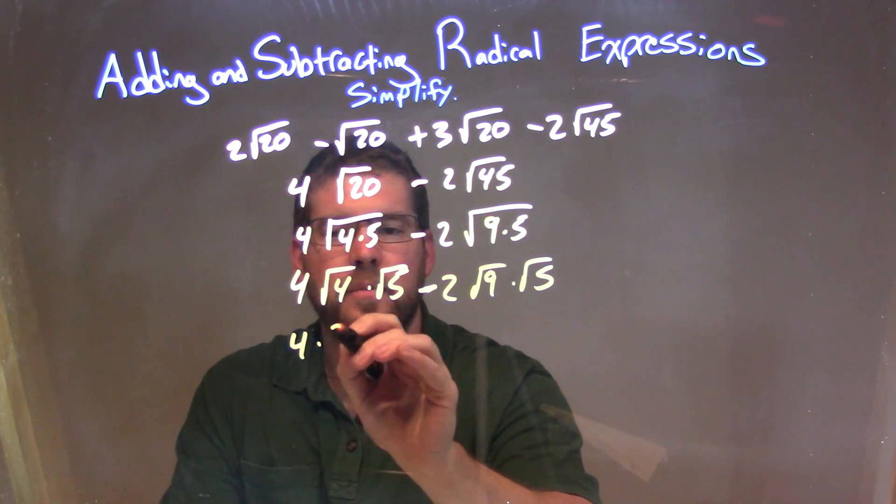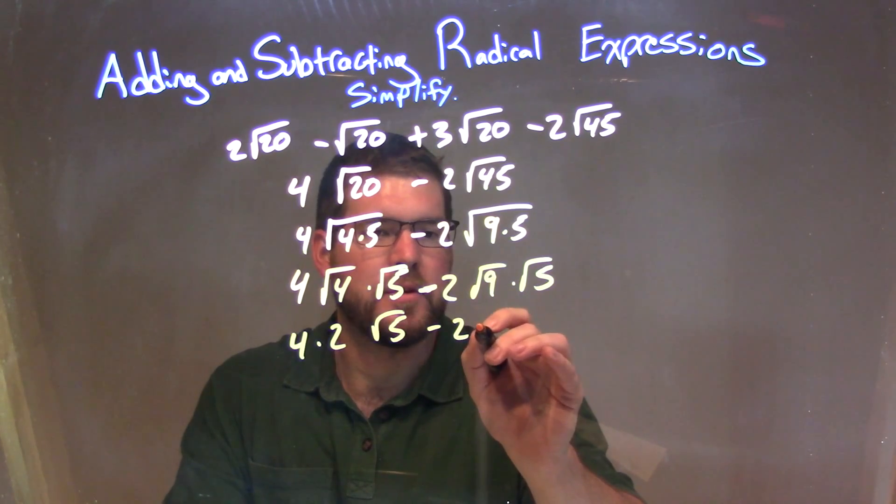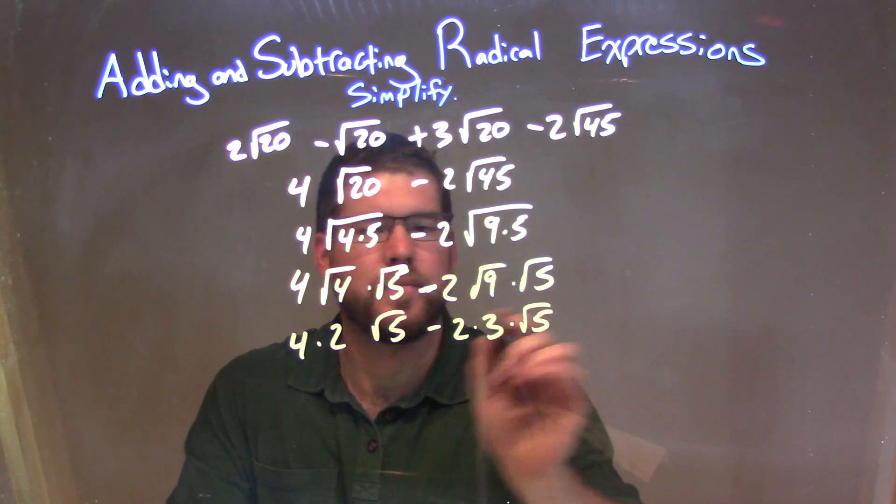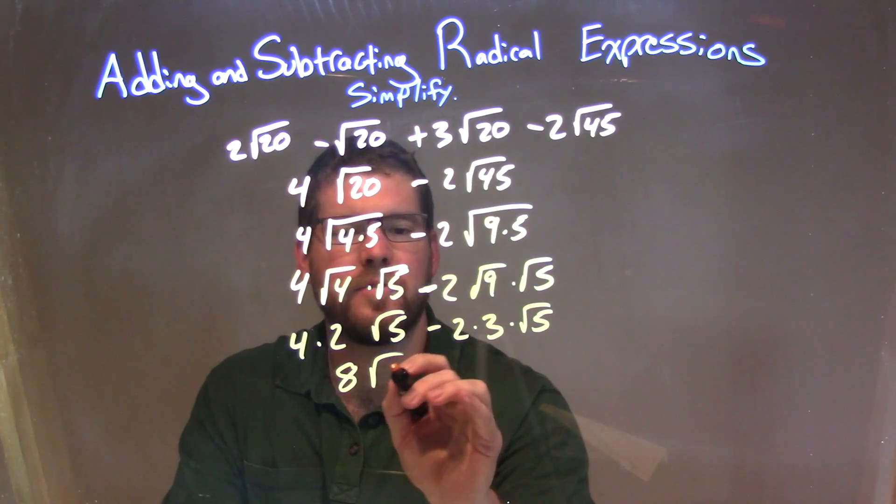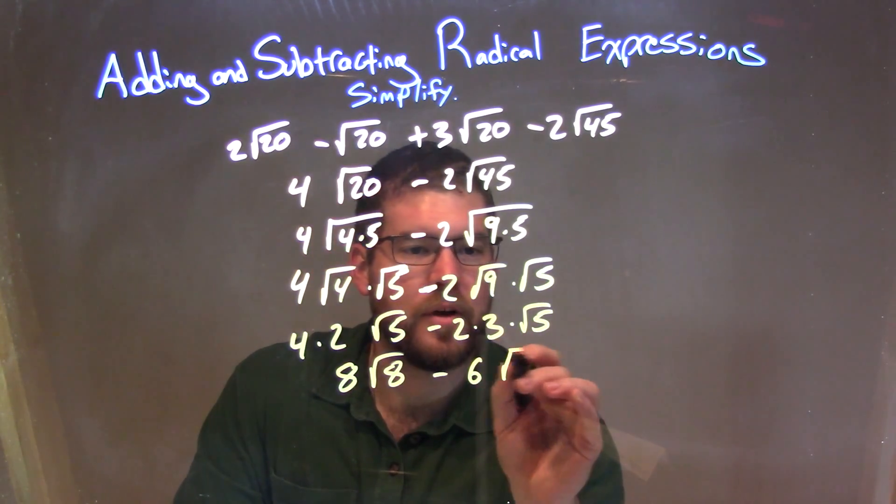The square root of 4 is 2, so we have 4 times 2 times the square root of 5 here, and 2 times the square root of 9, which is 3, times the square root of 5. Simplify a little bit more here: 4 times 2 is 8, we have 8 square root of 5 here, minus 2 times 3, which is 6, square root of 5.